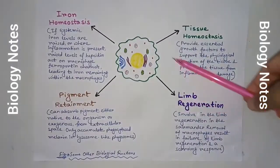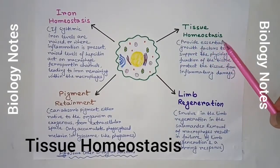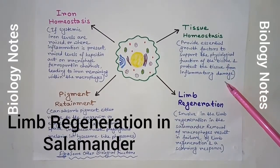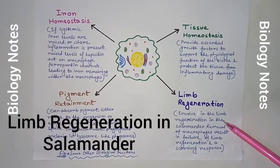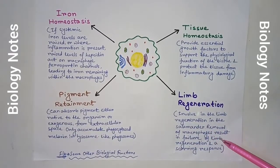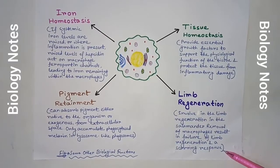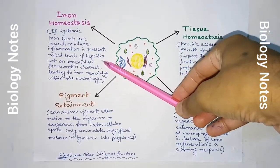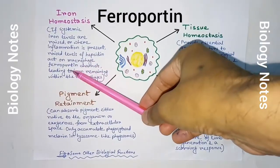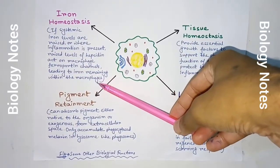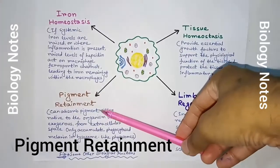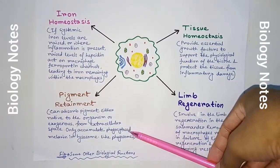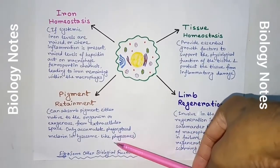This diagram shows some other biological functions of macrophages. Tissue homeostasis: macrophages provide essential growth factors to support the physiological function of tissue and protect tissue from inflammatory damage. Lymph regeneration: macrophages are involved in lymph regeneration in the salamander; removal of macrophages results in failure of lymph regeneration and a scarring response. Iron homeostasis: if systemic iron levels are raised or where inflammation is present, raised levels of hepcidin act on macrophage ferroportin channels, leading to iron remaining within the macrophages. Pigment retainment: macrophages can absorb pigment either native to the organism or exogenous from extracellular spaces, and only accumulate phagocytosed melanin in lysosome-like phagosomes.